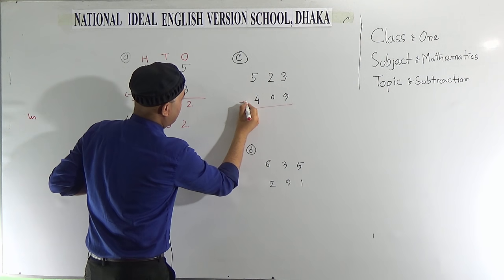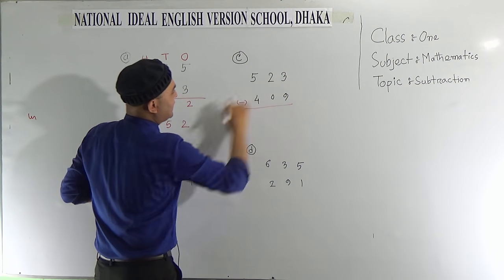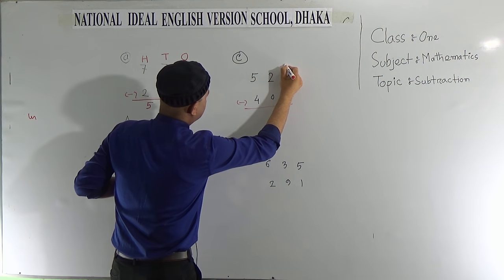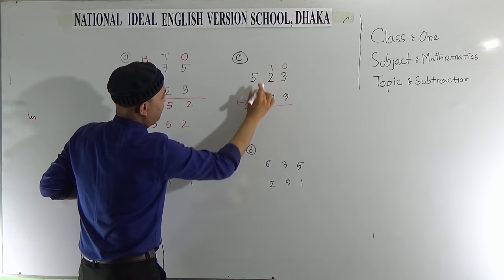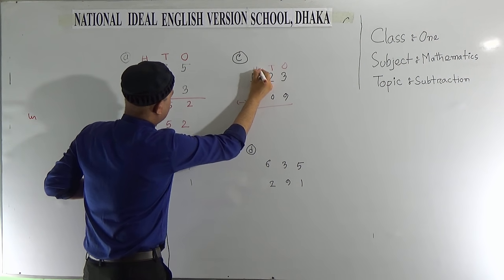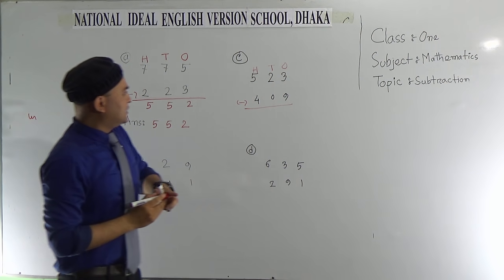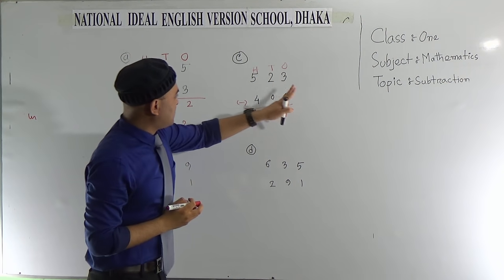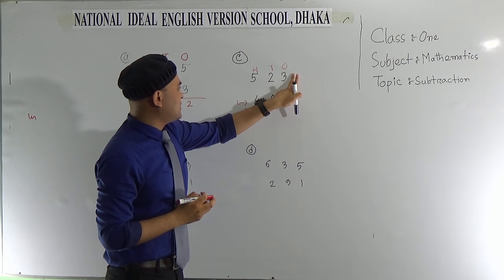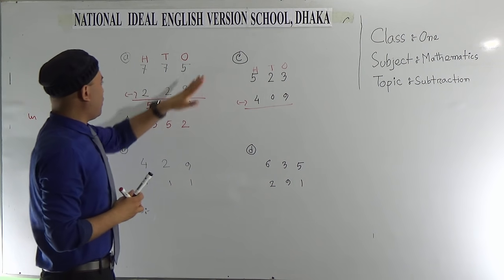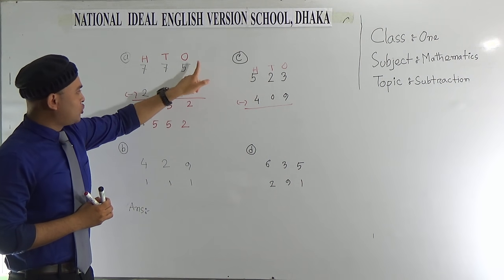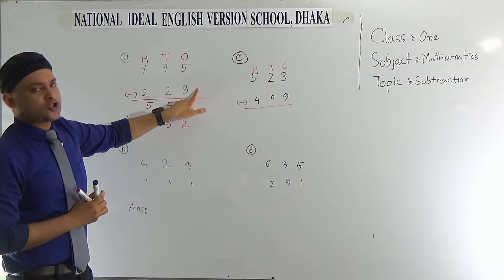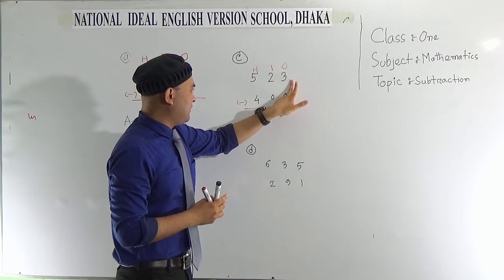Next problem is 523 and 409. Similarly we can draw a line and take the minus sign. The place value of 3 and 9 is 1's, 2 and 0 is 10's, and 5 and 4 is 100's. Now subtract 9 from 3. We know that always the top will be bigger than bottom one, but here is the problem. This 3 is smaller than 9.